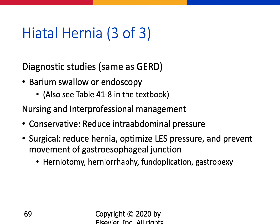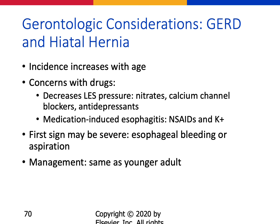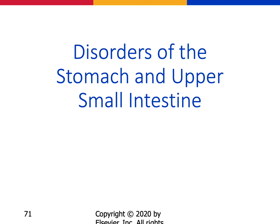Diagnostics for hiatal hernia include barium swallow or endoscopy. Treatment starts conservatively — reduce pressure, reduce acid. If that's not working, surgical repair is needed; surgery is more likely with hiatal hernia than with GERD. Types include herniotomy, herniorrhaphy, fundoplication, and gastropexy. In older adults, some drugs may decrease lower esophageal sphincter pressure more than usual; watch for esophageal bleeding or aspiration pneumonia as more severe signs.